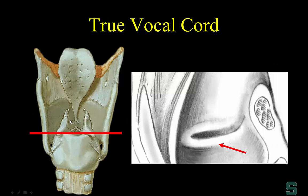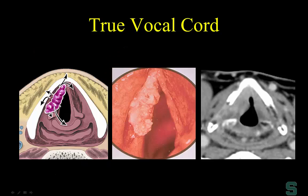The true vocal cord is very easy — it's located at the cricoarytenoid joint. When we see the cricoarytenoid joint, we know we're at the true vocal cord level. On the schematic, here's the arytenoid cartilage, the cricoid cartilage, and the cricoarytenoid joint showing typical spread patterns of true vocal cord carcinoma. Here's a verrucoid carcinoma of the right true vocal cord on CT — cricoid cartilage, arytenoid cartilage, cricoarytenoid joint, and there is our true vocal cord carcinoma.